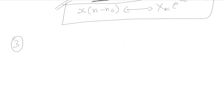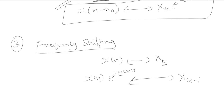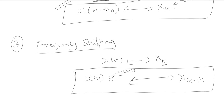The third property is frequency shifting. If x[n] is a periodic signal with coefficient x[k], and we multiply this signal by a complex exponential e^(j·m·ω₀·n), where m is some constant, there will be a shift in the harmonics of the frequency. The coefficient at index k becomes x[k−m]. This is the frequency shifting property — multiplying by a complex exponential shifts the harmonics.